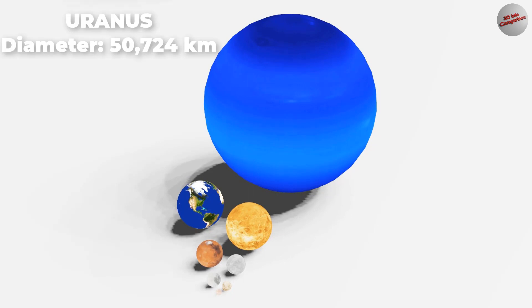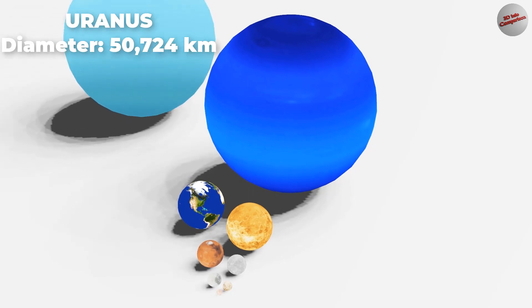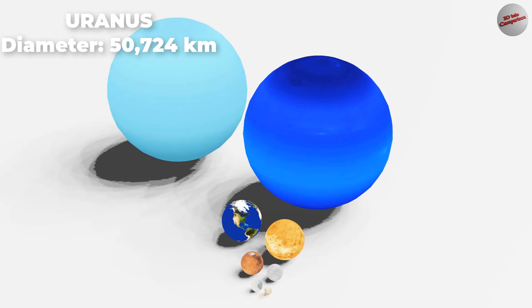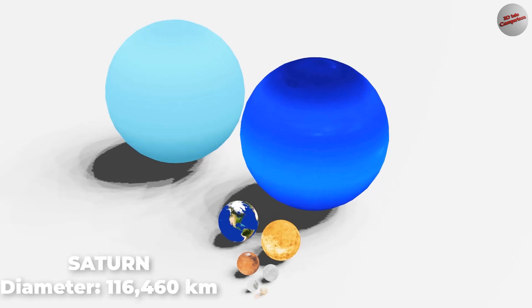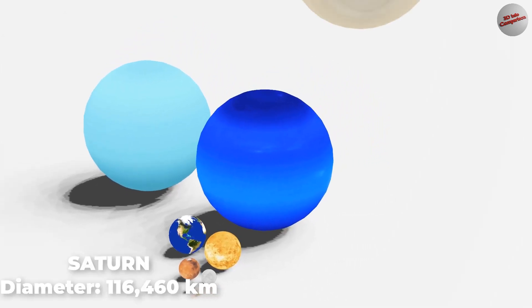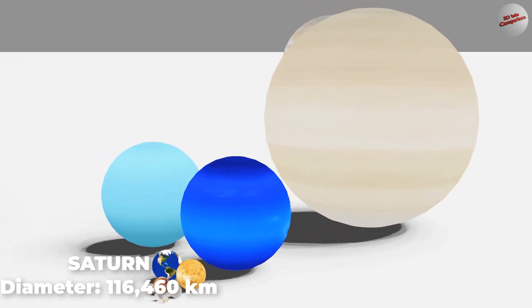Uranus, the seventh planet from the Sun, is a gas giant with a unique feature: it rotates on its side. Saturn, the sixth planet from the Sun, is known for its iconic rings made up of ice and rock particles. It is a gas giant with a mesmerizing beauty.